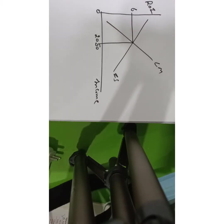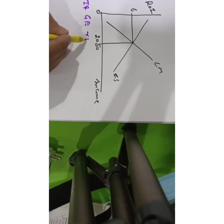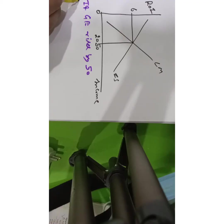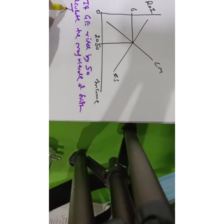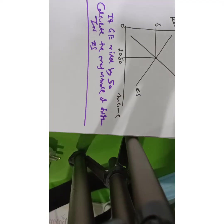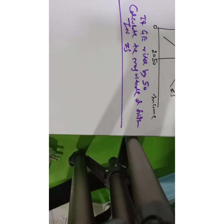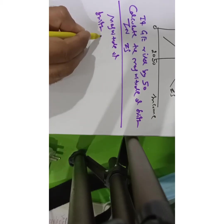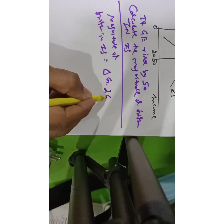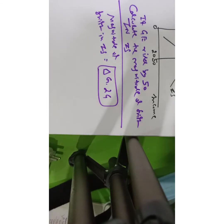Now I'll teach you more things using this diagram. Suppose the question says: if government expenditure rises by 50, calculate the magnitude of shift in IS. The formula for the magnitude of shift in IS is delta G times alpha G. To solve this, I first need alpha G.